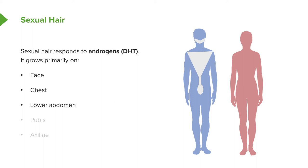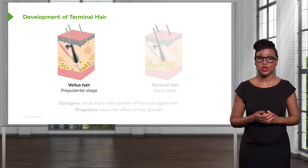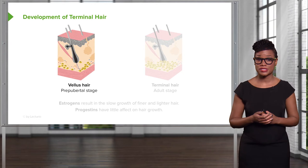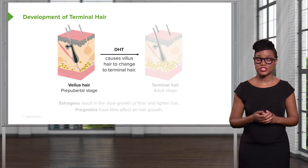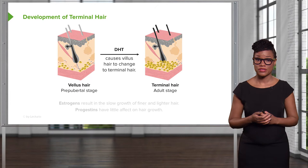Let's now talk about the development of terminal hair. First, let's define vellus hair, which is the prepubertal stage. With puberty onset, vellus hair is usually changed to terminal hair. Terminal hair tends to be coarser than vellus hair. Estrogens result in the slow growth of finer and lighter hair, and progestins have little to no effect on hair growth at all.